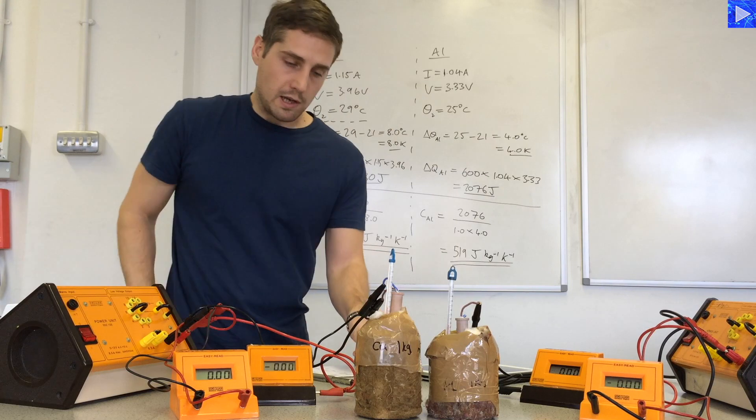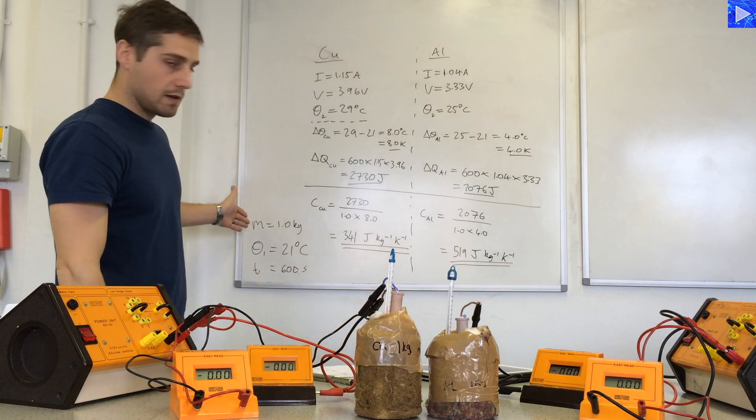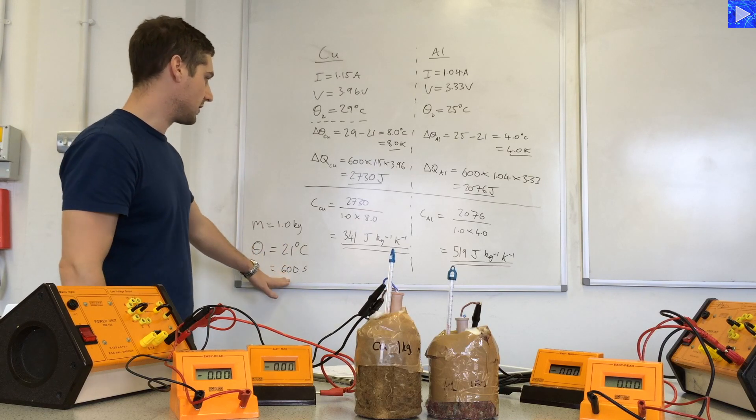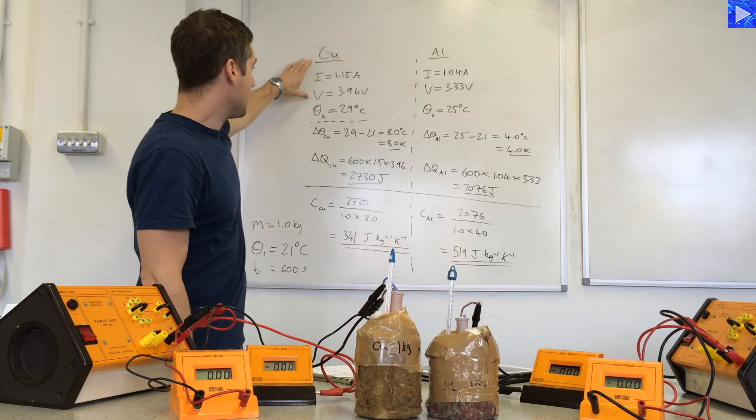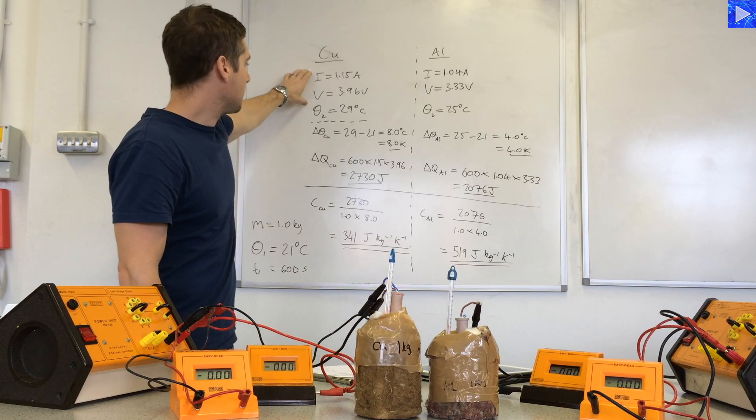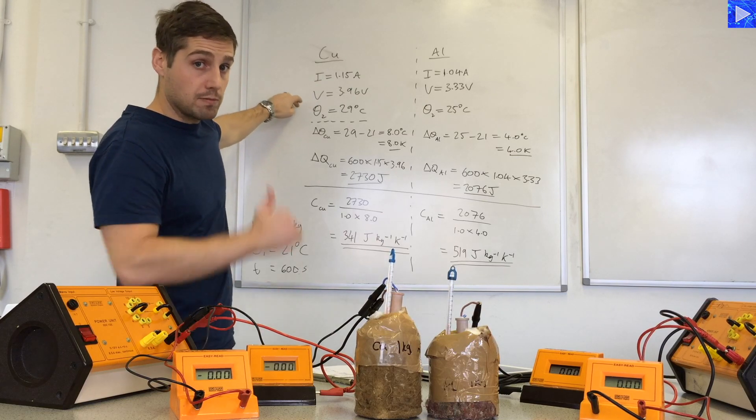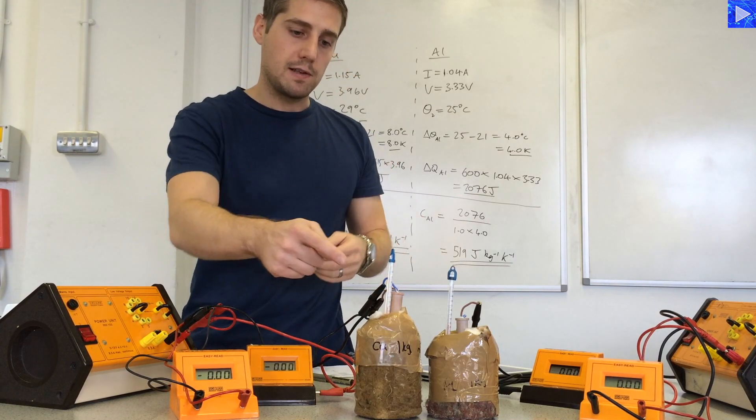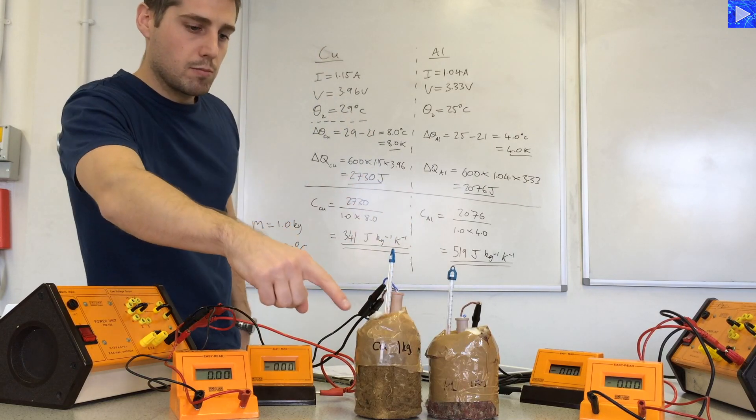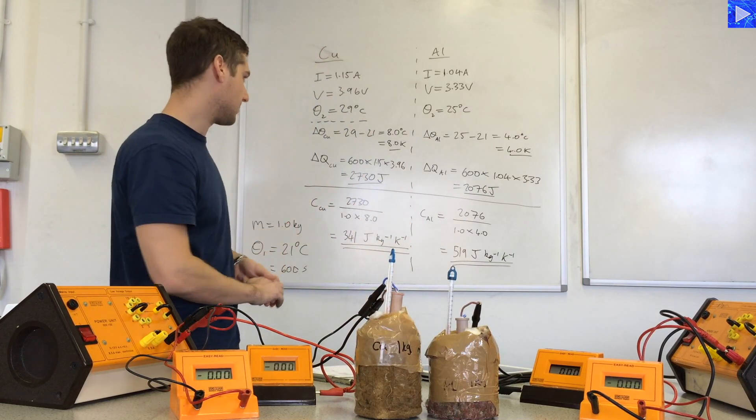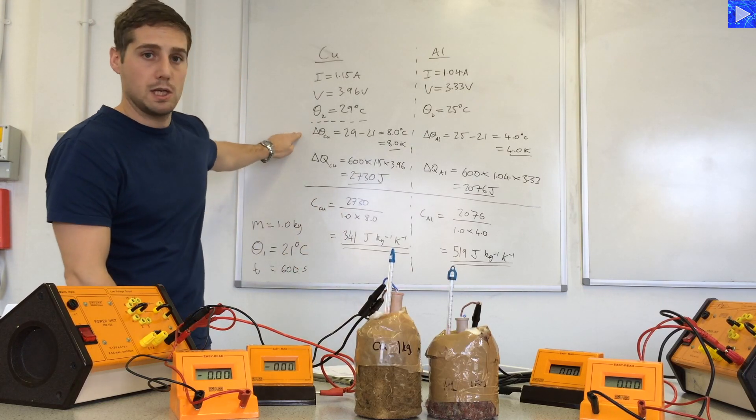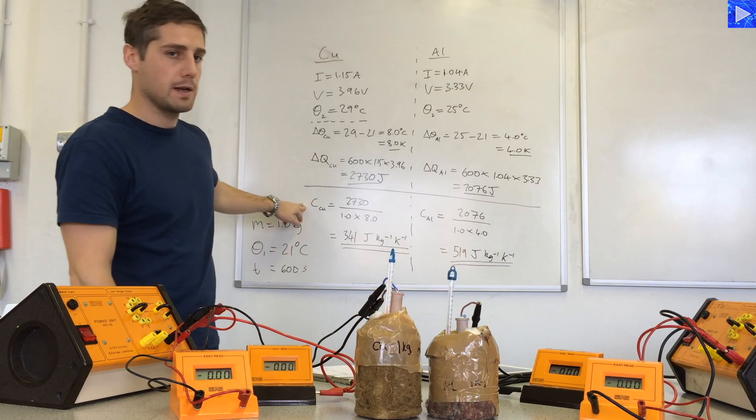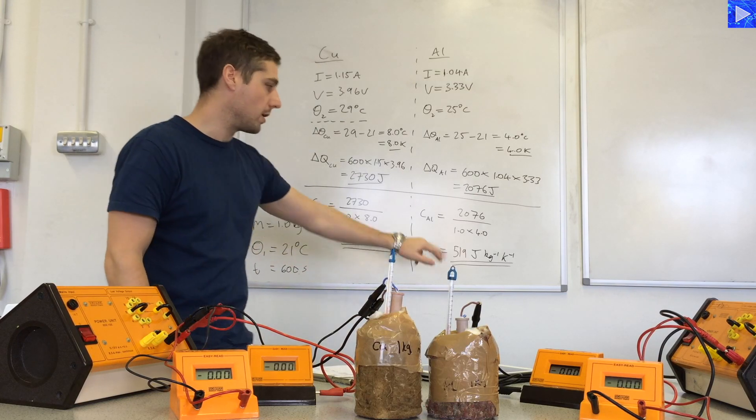So we've determined the specific heat capacities for two metals there. We started with the mass, the initial temperature. We were going to use 10 minutes, which is 600 seconds. We put a heater in there, recorded the current and voltage for the heater, left it on for 10 minutes, recorded the maximum temperature rise. Because after you switch the heater off, there's still heat to be dissipated and to travel through the block and to reach the thermometer. So we wanted to see what the maximum temperature rise was, worked out the temperature difference, worked out the heat transferred from the heater, then put that into the specific heat capacity equation to work out the specific heat capacities.